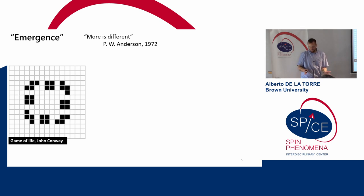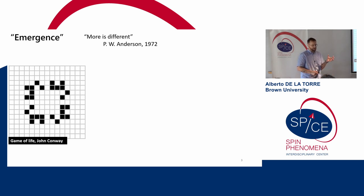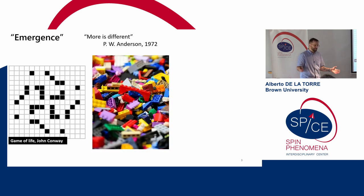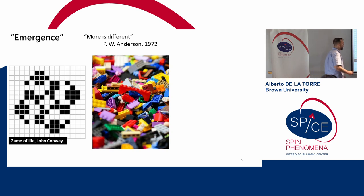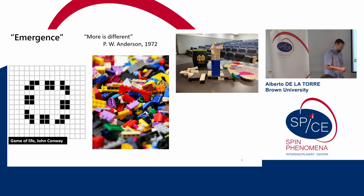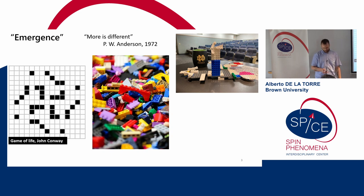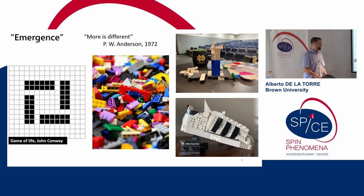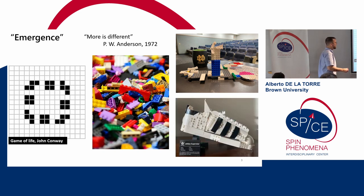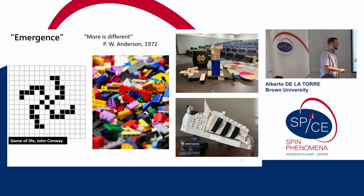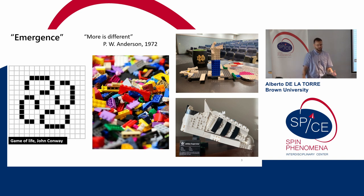Another example that everyone knows, and I think it really exemplifies this idea that you can change the emerging properties if you change the rules, is Lego. Everyone has played with Lego. I usually like to take Lego pieces and ask my audience to build some emergence. I gave a talk in Notre Dame and they built this weird pattern. But when you really look at the rules that Lego wants you to build by, you get something very different. So with the same subset of elements, you can create very different emerging properties if you change the rules.